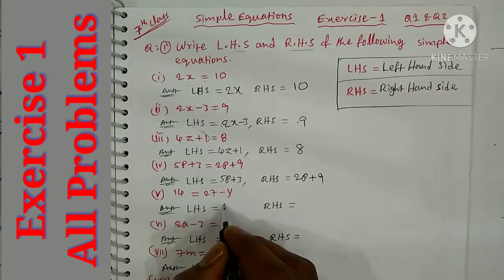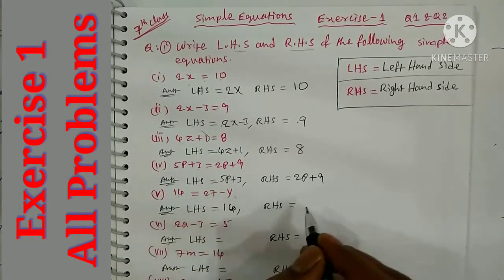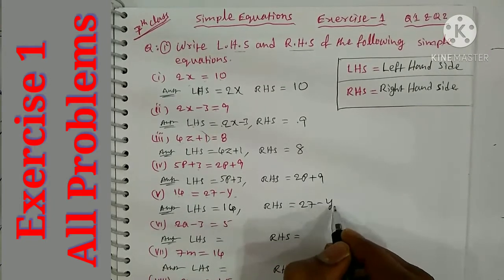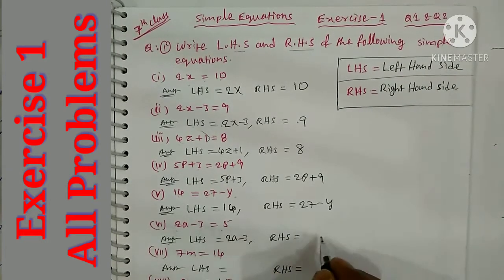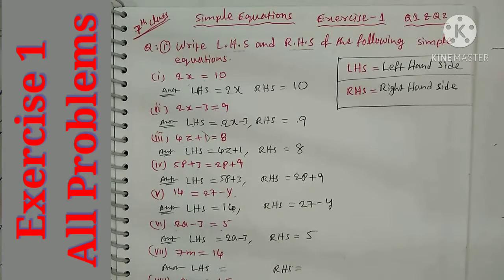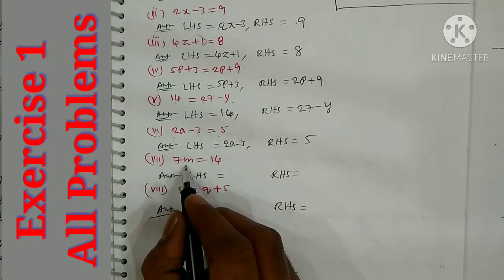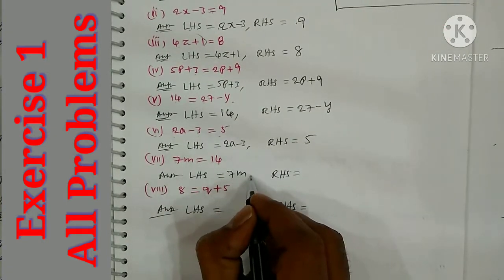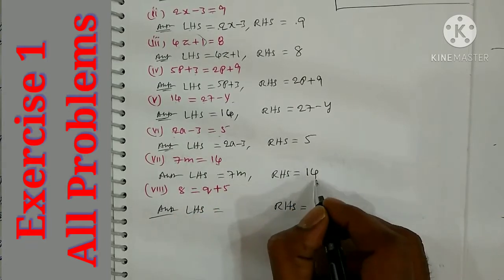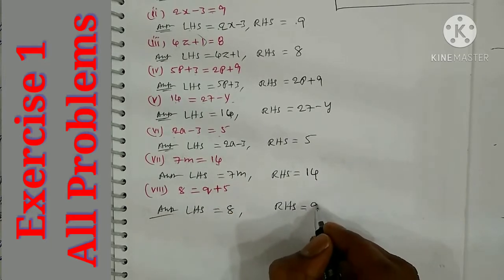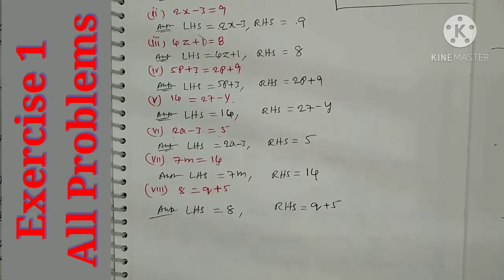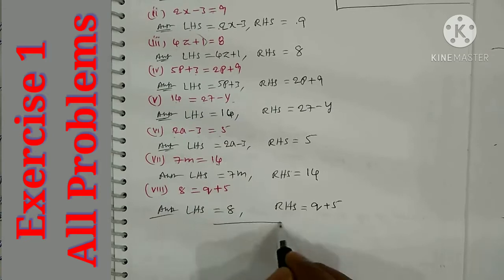Left hand side is 14, and right hand side is 27 minus y. For the 6th question, left hand side is 2a minus 3 and right hand side is 5. Then left hand side is 7m and right hand side is 14. Next, left hand side is 8 and right hand side is q plus 5.